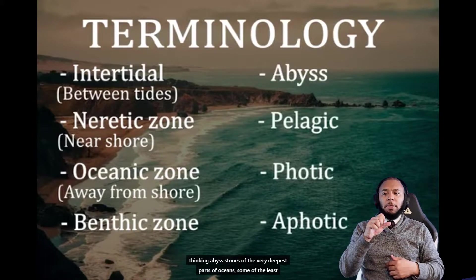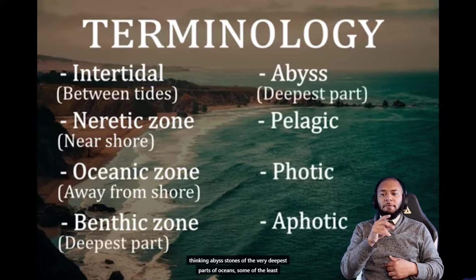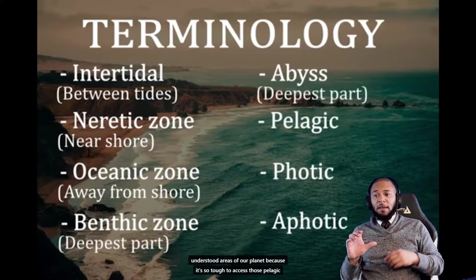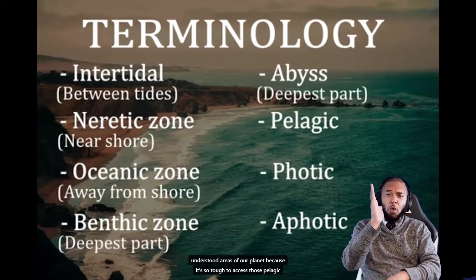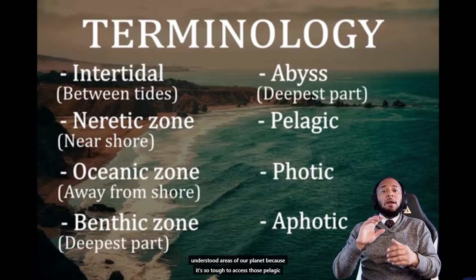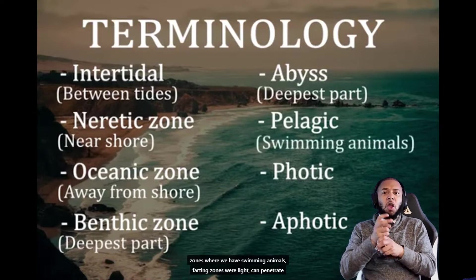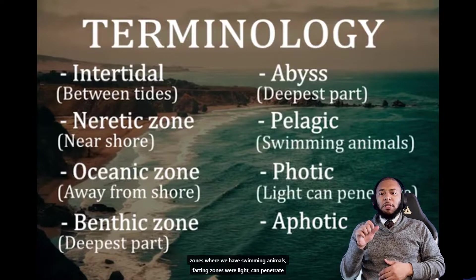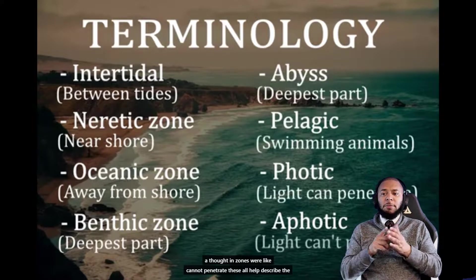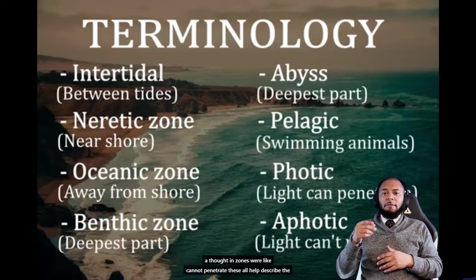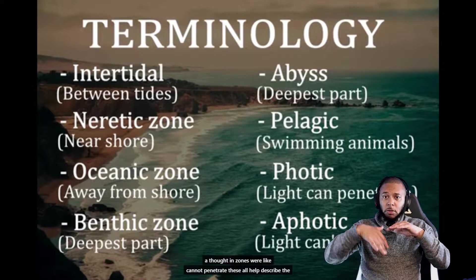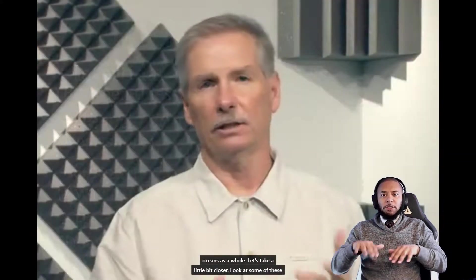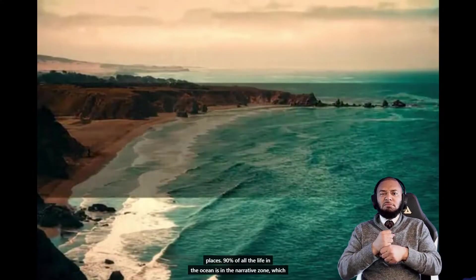Benthic and abyss zones are the very deepest parts of oceans — some of the least understood areas of our planet because they're so tough to access. Pelagic zones are where we have swimming animals. Photic zones are where light can penetrate, and aphotic zones are where light cannot penetrate. These all help describe the oceans as a whole.